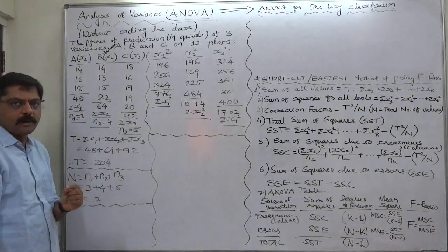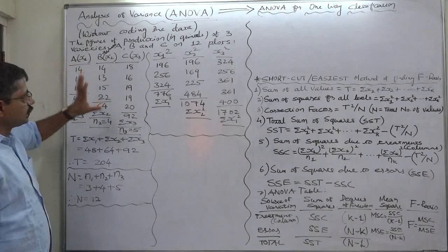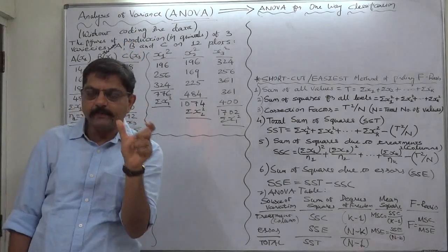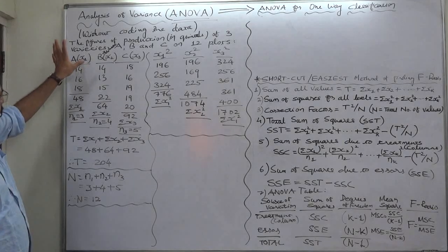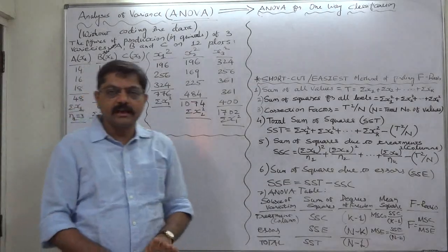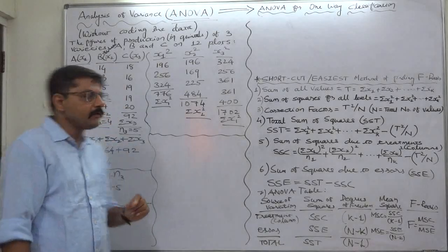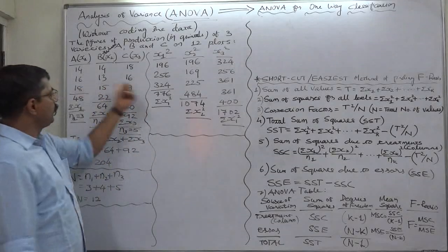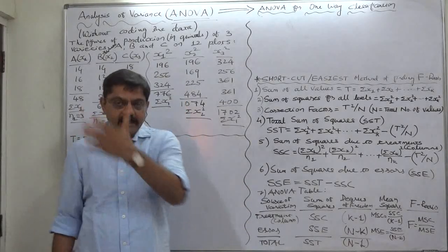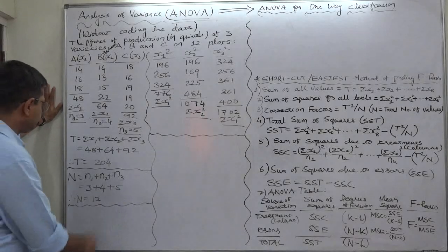The F-test is very sensitive about the assumption that samples are derived from a normal population. The independent variable is varieties of wheat, and the dependent variable is production of wheat. We ignore the type of land. There is only one dependent variable — production — and only one independent variable — variety of wheat. We want to know if there is any significant difference in the mean production of these three varieties.